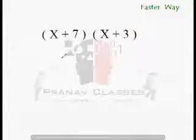So, the answer would be x square, 3x, 7x is 10x and 21. x square plus 10x plus 21. That's it.